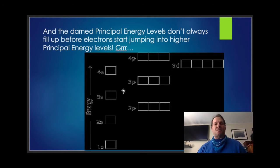And the darn principle energy levels don't always fill up before electrons start jumping into higher principle energy levels. There's overlapping of the different types of sub-levels. So, for example, one S is here. Two S is here. Two P is higher than that. Three S is there. Three P is here. Four S is here. But then the three D is lower in energy than the four P. And things start to get confusing because I'm filling up energy level three before I've completed energy level four. Hence the GRRRR.